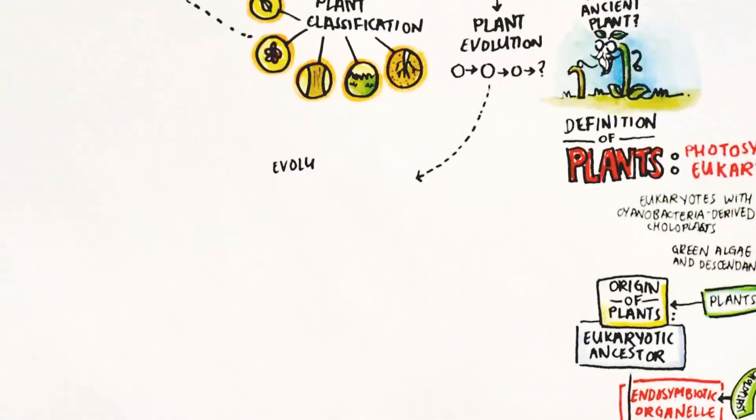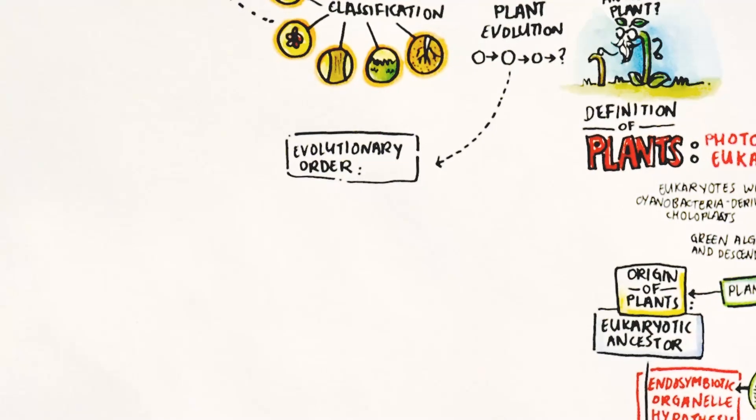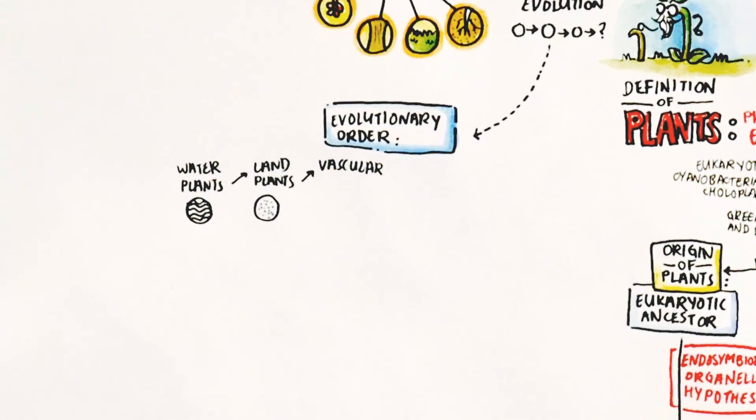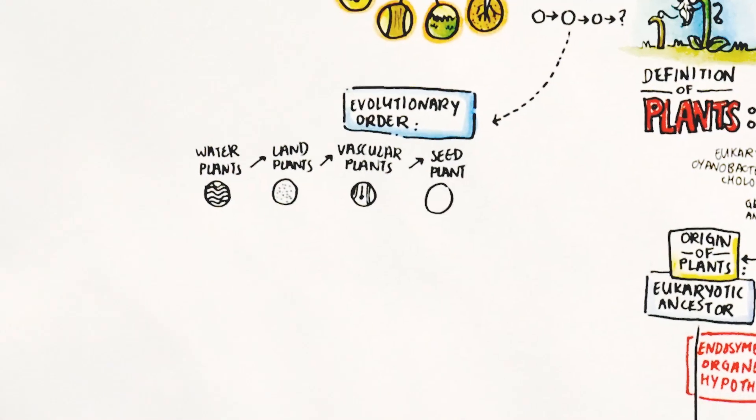The progression of plants is in the following sequence: from water plants to land plants, to vascular plants, to seed plants, to flowering plants. The rationale for each critical step in plant development is: